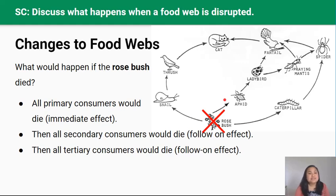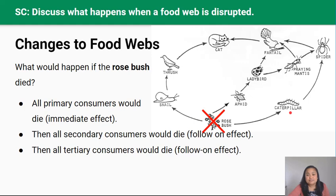Here's the same food web again — what would happen if the population of one organism changed? What if the rosebush died? The rosebush is the primary producer. If it died, the immediate effect would be that the consumers feeding on it — the snail, the aphid, and the caterpillar — would have no food, and would starve and die. The follow-on effect would be that all the secondary and tertiary consumers in the food web would die too, because the animals they feed on are now dead. So if the producer dies, all consumers die and the ecosystem collapses.